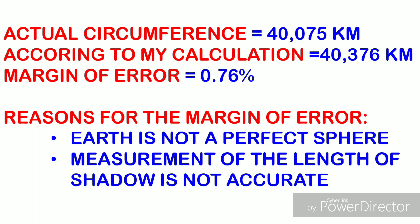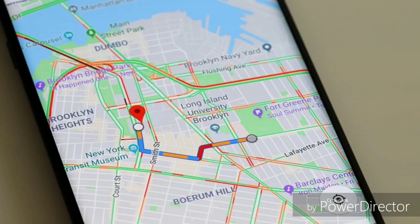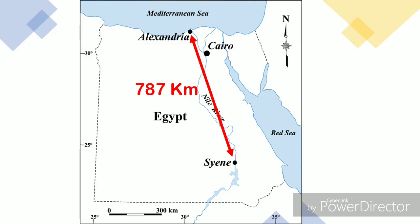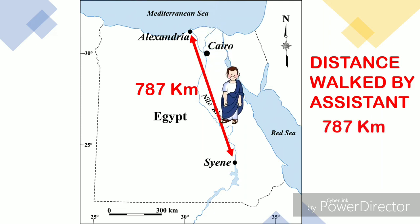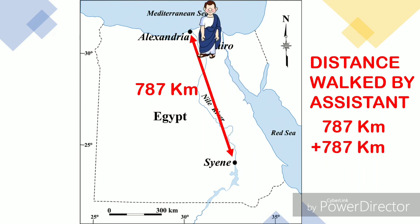We have found a rough approximation of the circumference of the Earth. While doing this experiment, we now have Google Maps to find the distance between two cities. But when Eratosthenes did this, there was no Google Maps. So he hired an assistant to walk 787 km from Alexandria to Syene to measure the length of the shadow and come back the same way. I feel pity for the man who walked 1,574 km for this result but doesn't get any recognition.